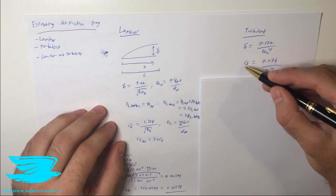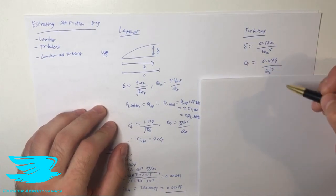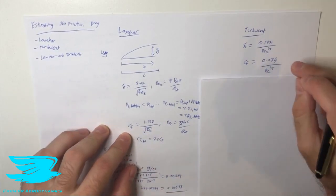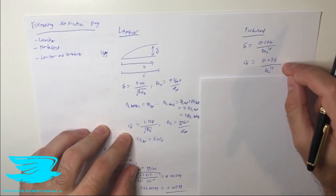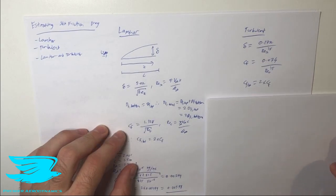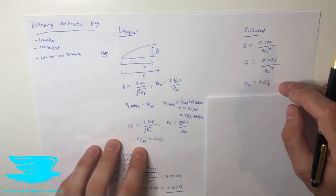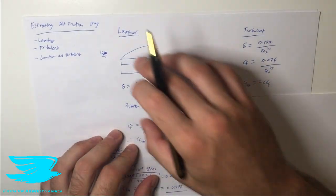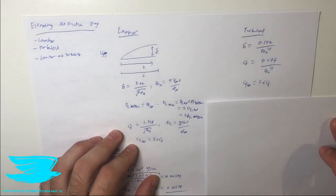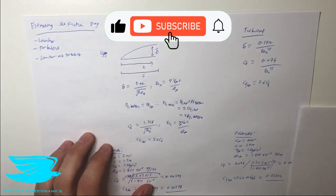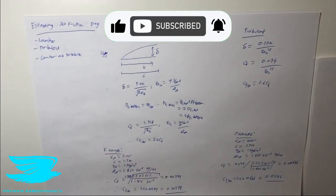Because the turbulent boundary layer is different in general compared to the laminar case, the skin friction drag coefficient calculation is quite different. For the laminar case it's 1.328 divided by the square root of the Reynolds number; for the turbulent case it's 0.074 divided by the Reynolds number to the power of 0.2. Similarly, the total skin friction drag coefficient for the entire plate is two times the CF for either the top or bottom surface.